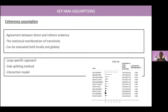Another assumption is the coherence assumption, defined as the agreement between direct and indirect evidence. It could be assessed both locally and globally using, for example, the loop-specific approach. In a loop such as placebo–methotrexate–adalimumab, you will compare the differences between your direct and your indirect evidence.